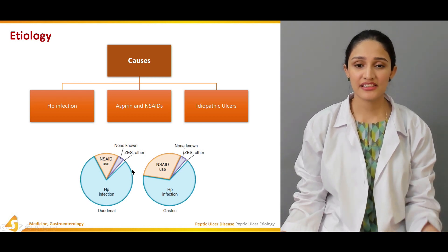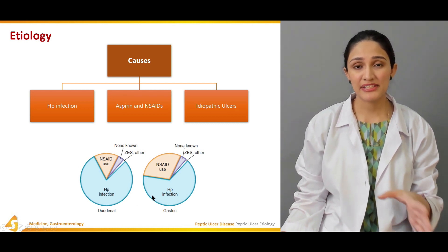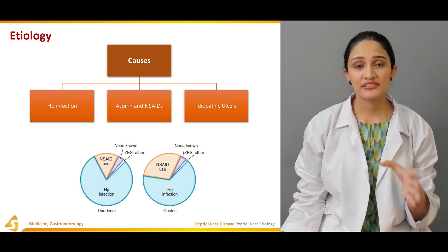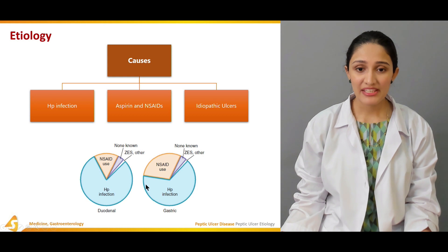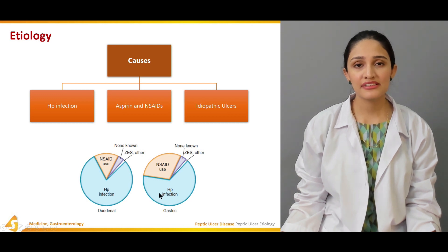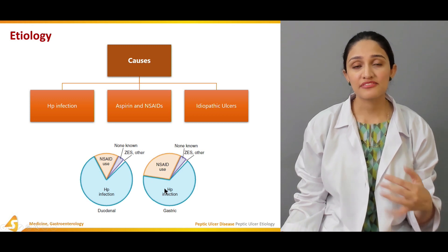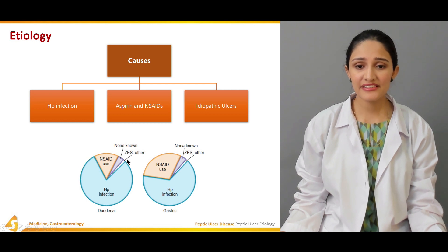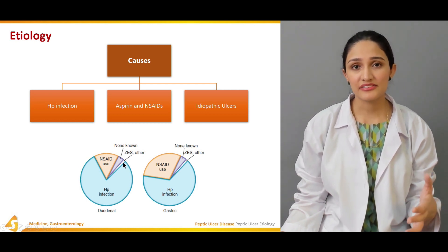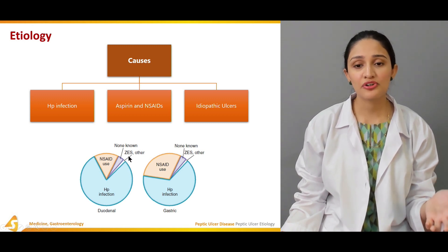As seen in this pie chart comparing duodenal ulcers and gastric ulcers, Helicobacter pylori infection is the major cause of both types, with NSAID and aspirin use being second. Gastric ulcers are more prone to be caused by NSAIDs and aspirin use. Other causating factors include Zollinger-Ellison syndrome and various unknown factors.